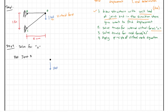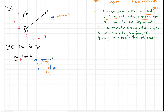For joint B, we have one kilonewton acting down, and forces from members AB and BC. I'll guess AB is in tension and BC is in compression — pointing toward the joint. I'll break BC into its components BCX and BCY. Taking sum of forces in the Y direction equals zero, with up positive: minus one kilonewton plus BCY equals zero, so BCY equals one kilonewton.